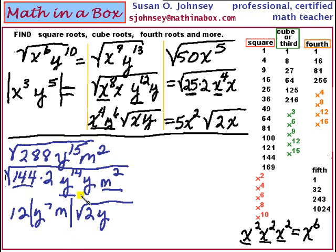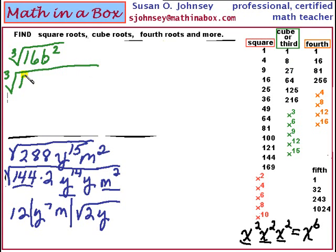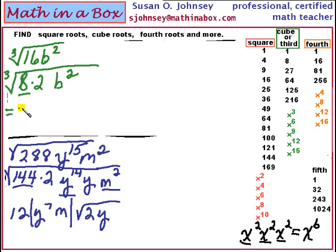Let's look at the cube root of 16b squared. Let's begin with the number 16. Which of these numbers will divide evenly into 16? Obviously it is 8. The b squared — its exponent is 2. We would need at least an exponent of 3 in order to find a cube root. So there is no way to change the b squared; we will not be able to find its cube root. Our answer is: the cube root of 8 was the 2, and then we still have underneath the cube root a 2 and a b squared.